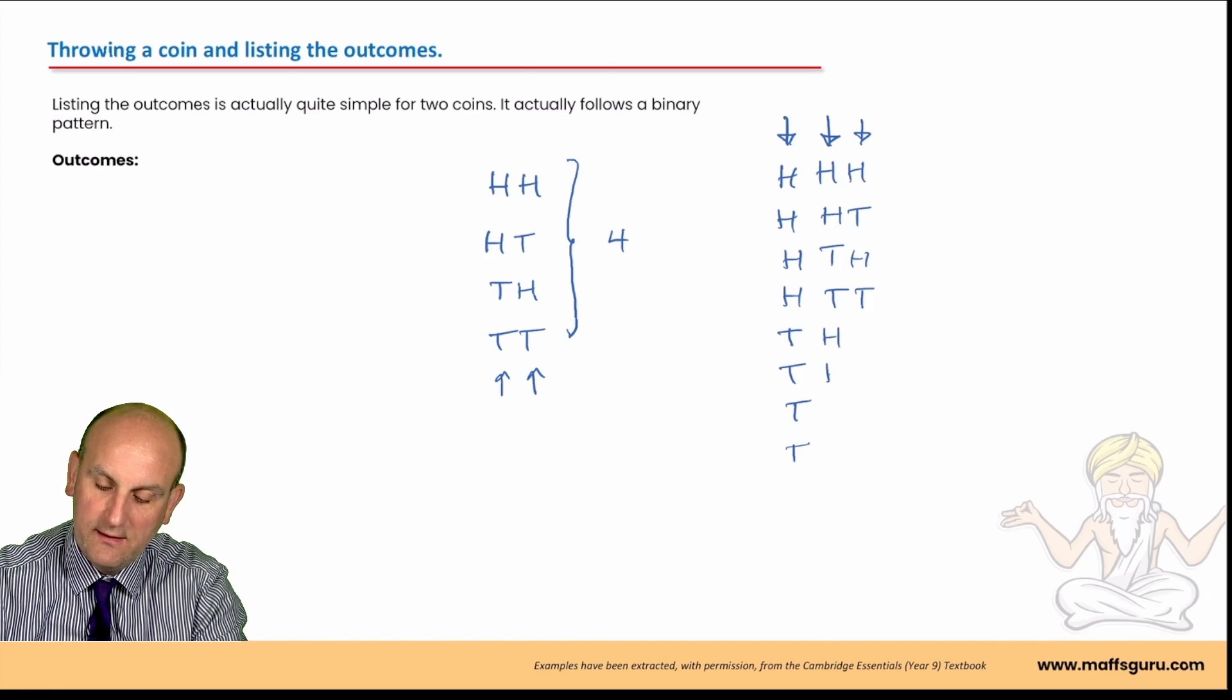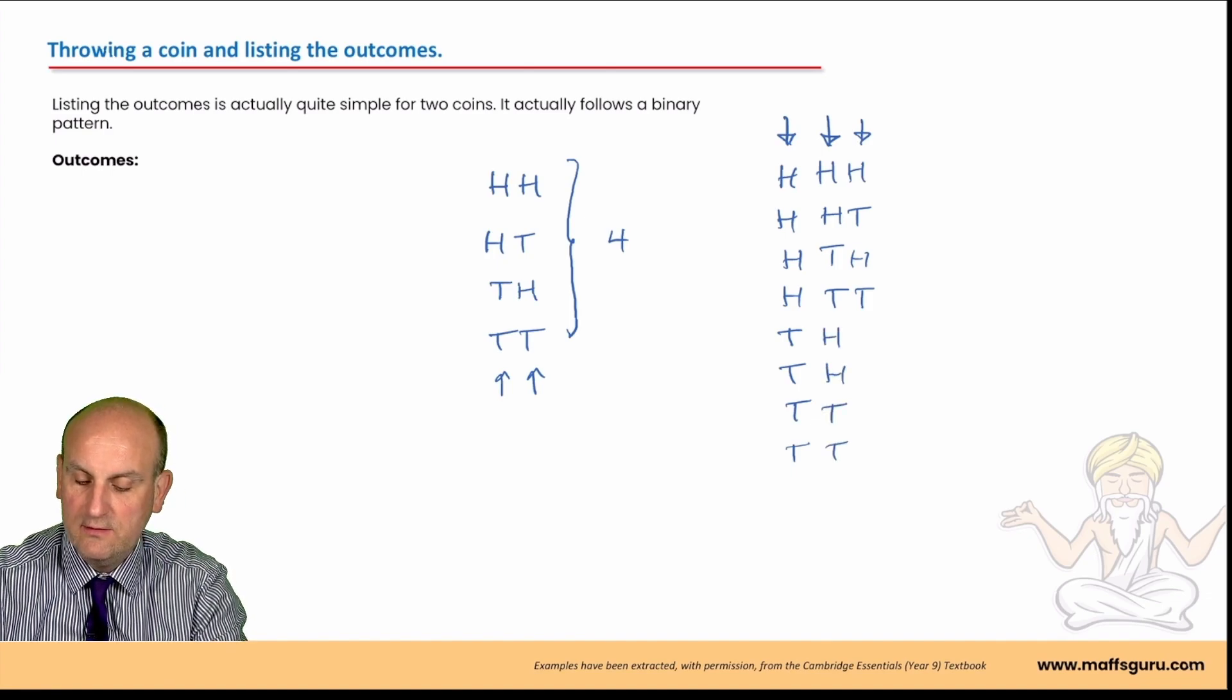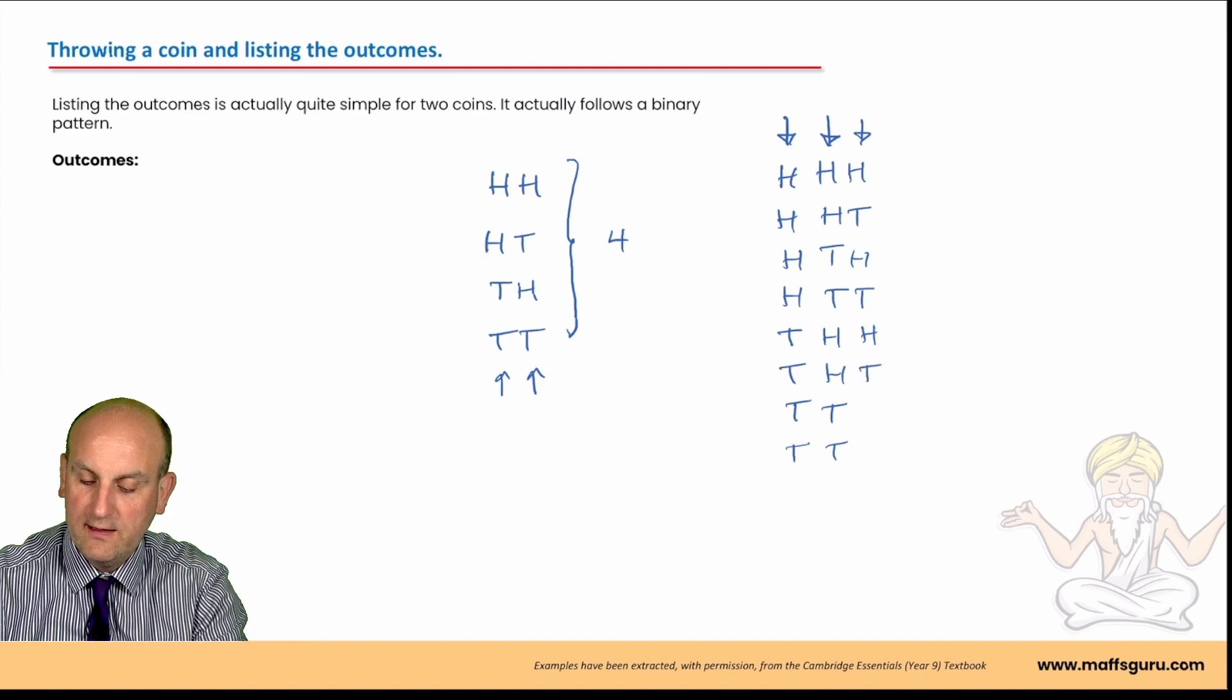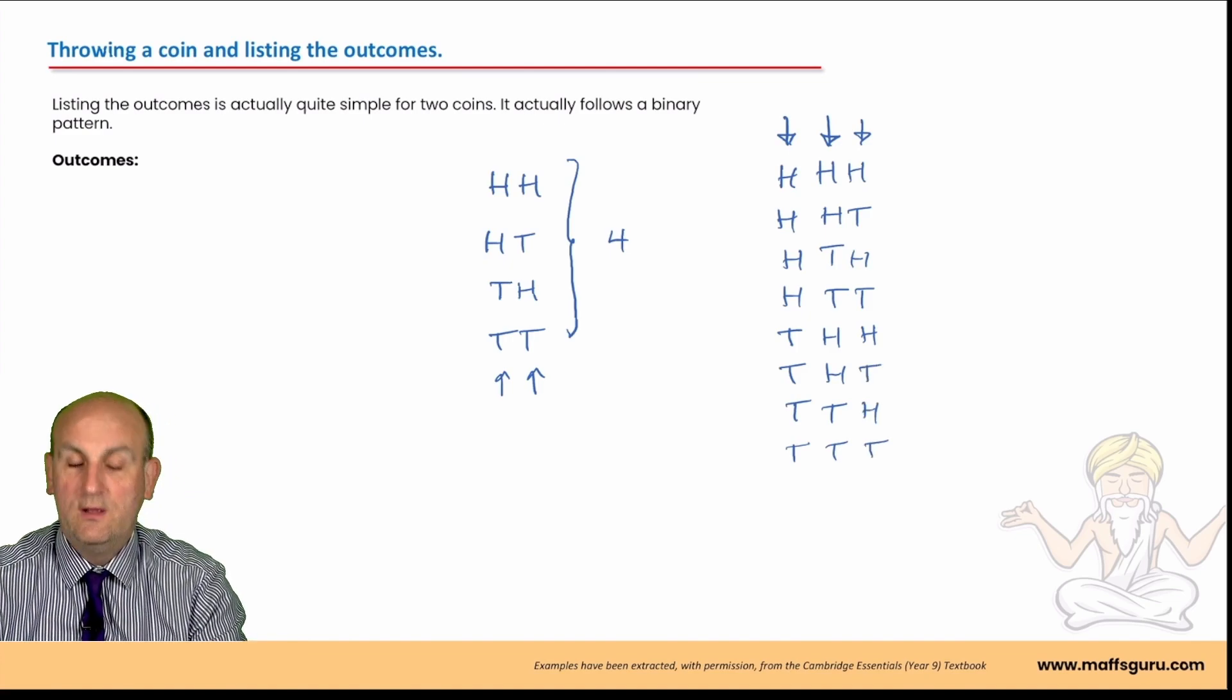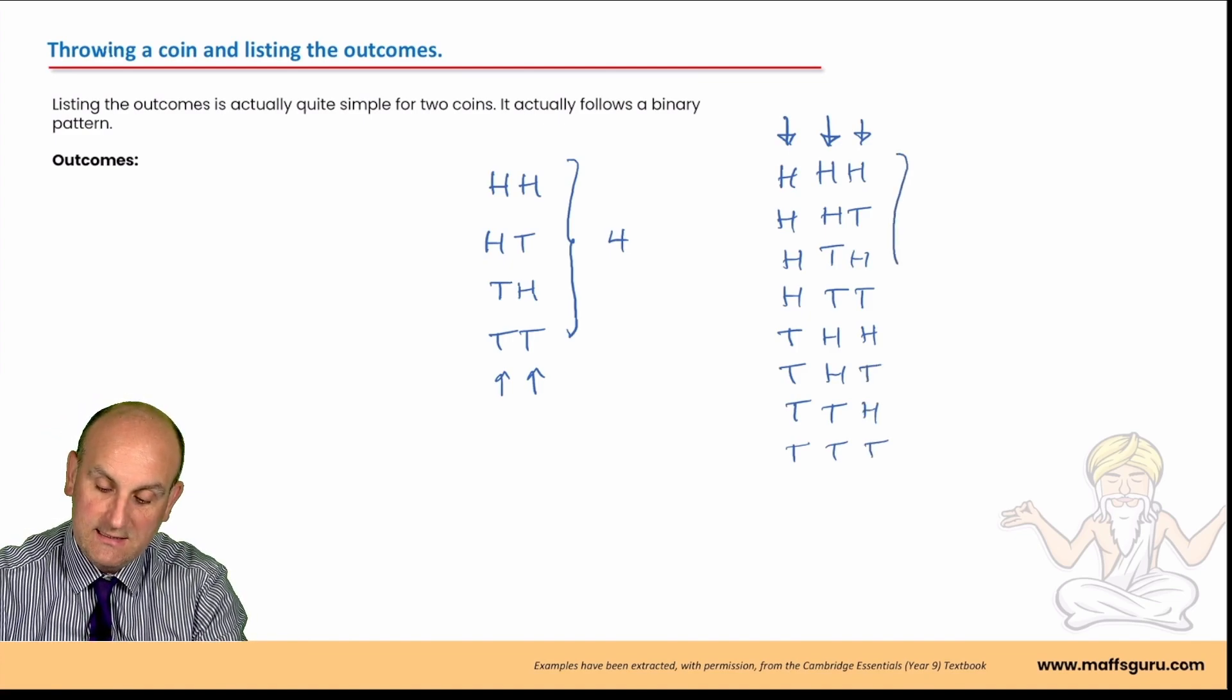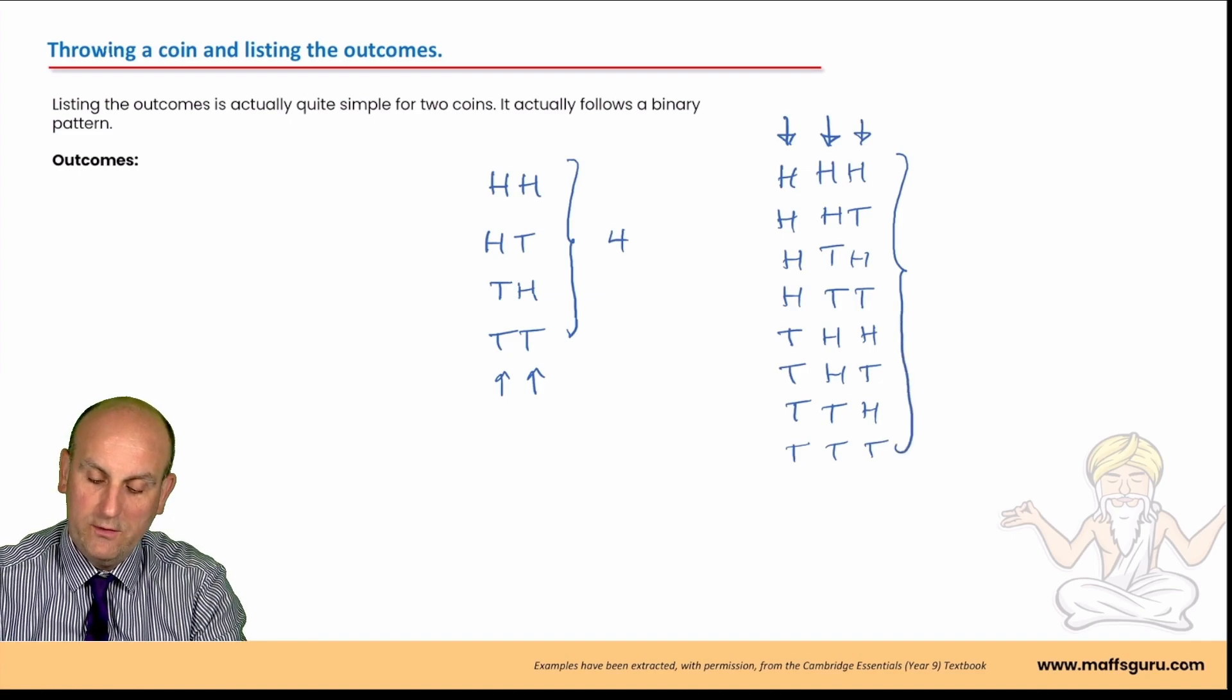I know I can continue this because I know there are going to be four tails. This one here is going to go head, head, tail, tail and this one's going to go head, tail, head and tail. So in that situation, how many different outcomes would we have? One, two, three, four, five, six, seven and eight.